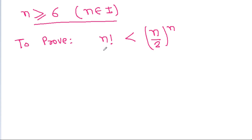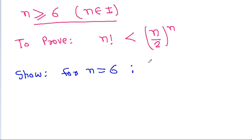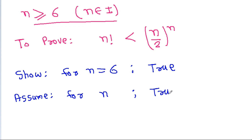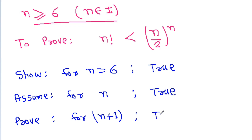We have to prove that n! < (n/2)^n for n ≥ 6. In induction, we show that for n equal to 6 this is true, then we assume that for some n this is true, and then we prove that for n+1 it will also be true. These are the three steps of induction.